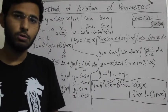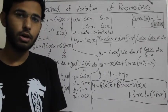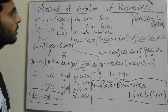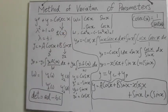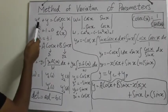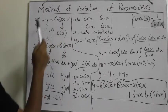Hello everyone, my name is Haroon and I will be explaining how to solve a second order differential equation by method of variation of parameters. I have an example here of a second order differential equation: y double dash plus y equals cos x.